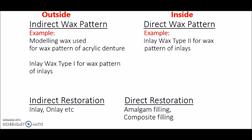A second example of indirect wax pattern is inlay wax type 1, which is used for making the wax pattern of inlays outside the oral cavity on a dental cast. Examples of direct wax pattern include inlay wax type 2, which is used for making the wax pattern of inlays inside the oral cavity. The two types of inlay waxes — type 1 and type 2 — differ in hardness and whether they are used inside or outside the oral cavity.